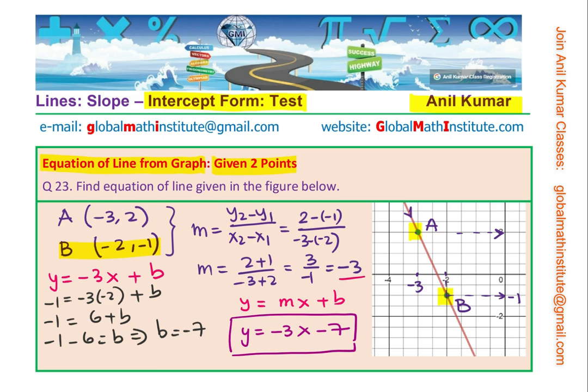So I hope these steps are absolutely clear. So from the graph, first thing, identify the points. Find their coordinates. Once you find the coordinates, then find slope. Slope is difference in y values divided by difference in x values. Once you get the slope, find the y-intercept using any one of these points. The y-intercept, B. That is how you get it. So we got the first one.